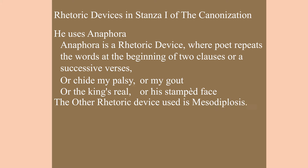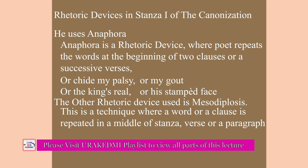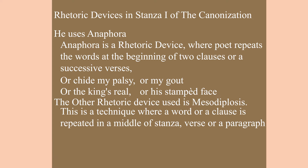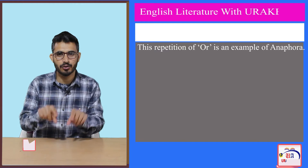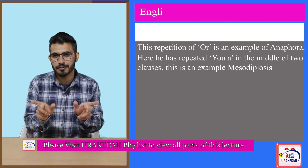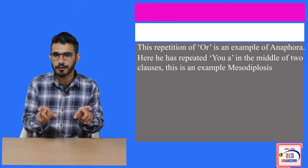The other technique used in the first stanza is mesodiplosis. Mesodiplosis is a technique where a word or clause is repeated in the middle of a stanza, verse, or paragraph. For example, in the fifth verse he says 'take you a course, get you a place' — repeating 'you a' twice in the middle of two different phrases. That form of repetition is known as mesodiplosis.